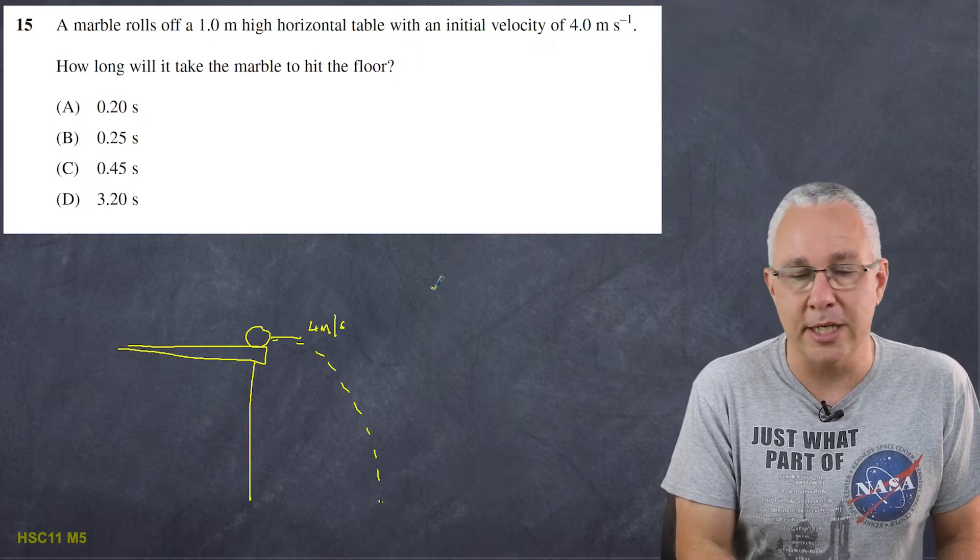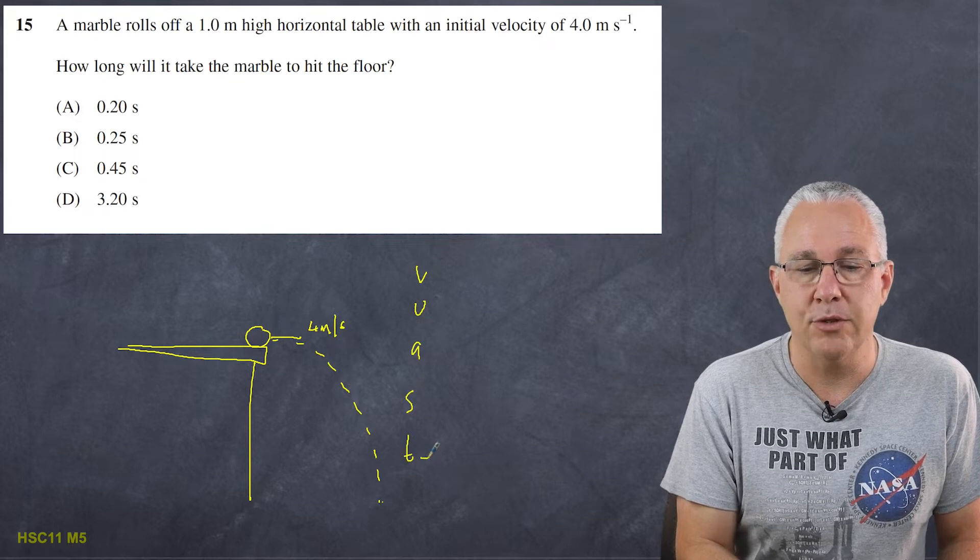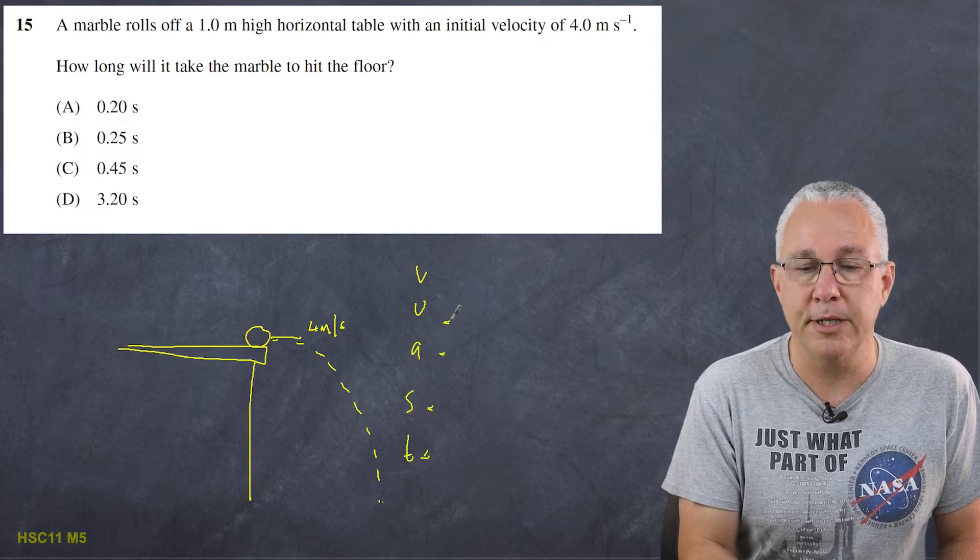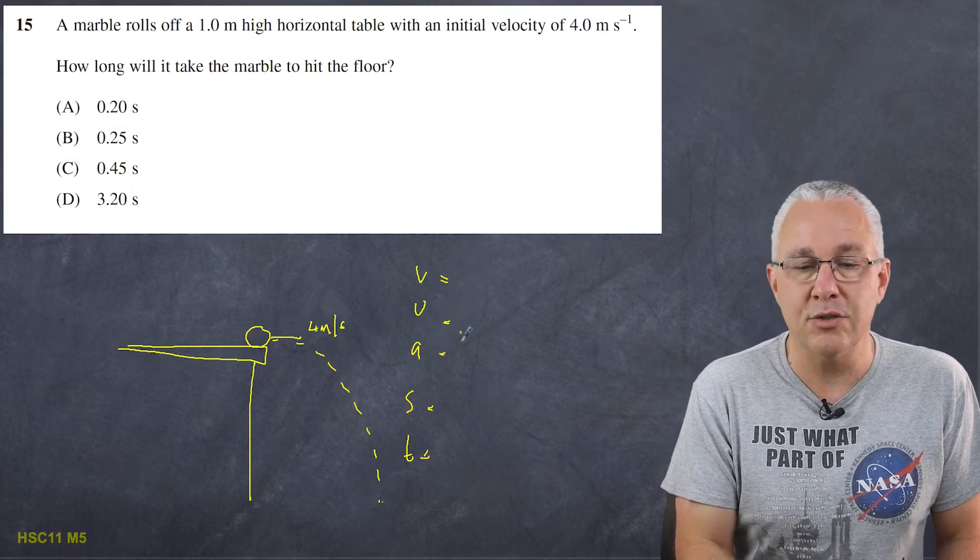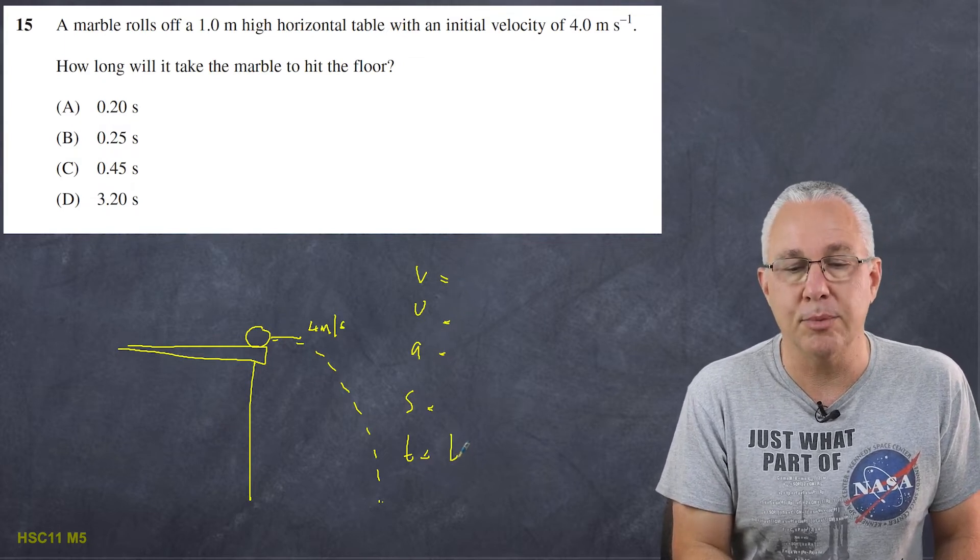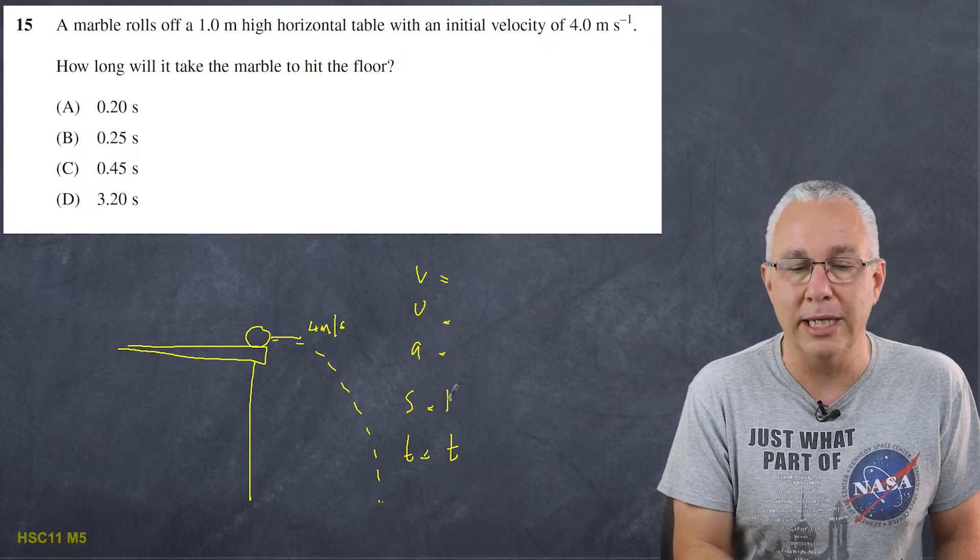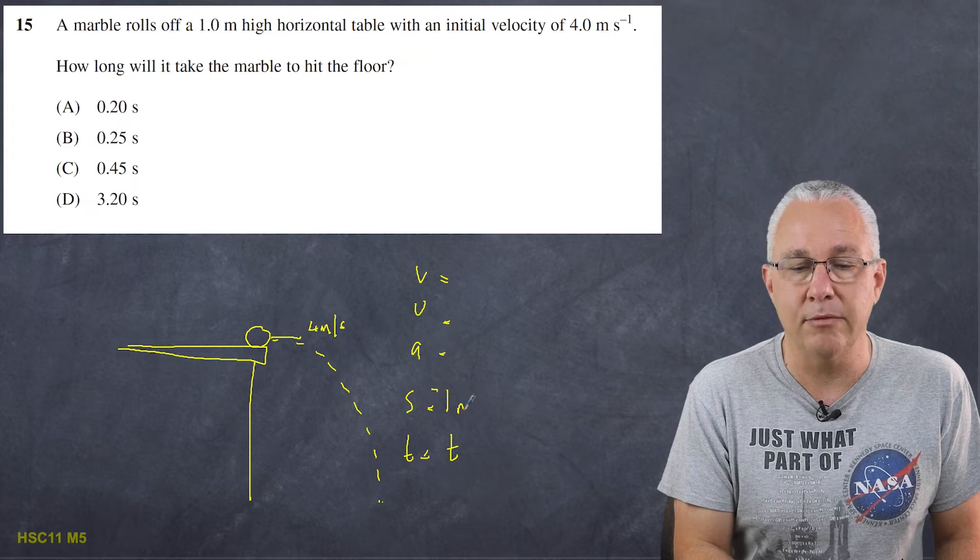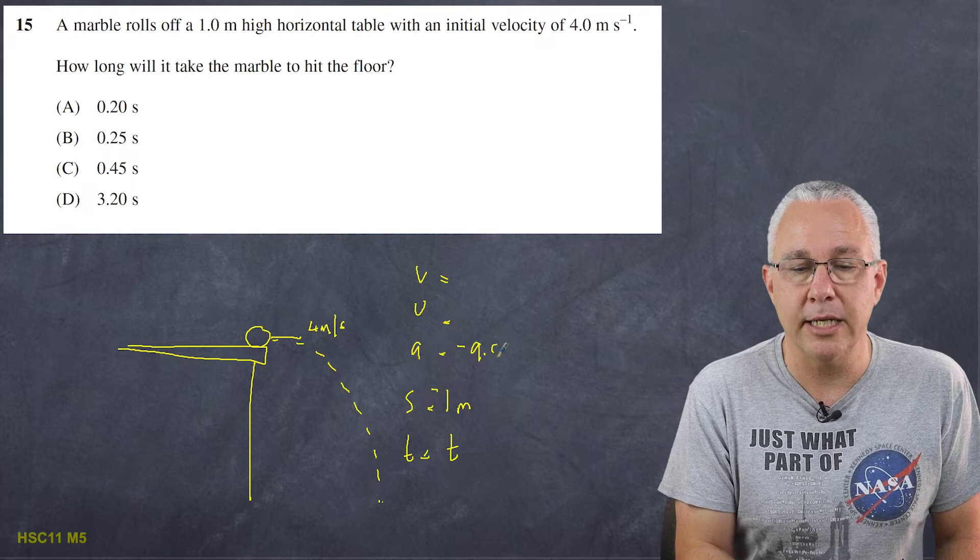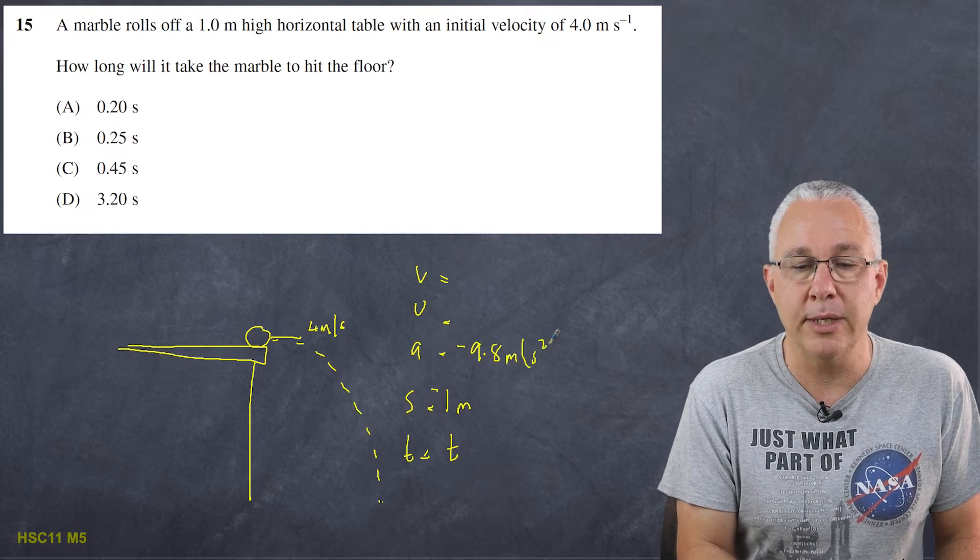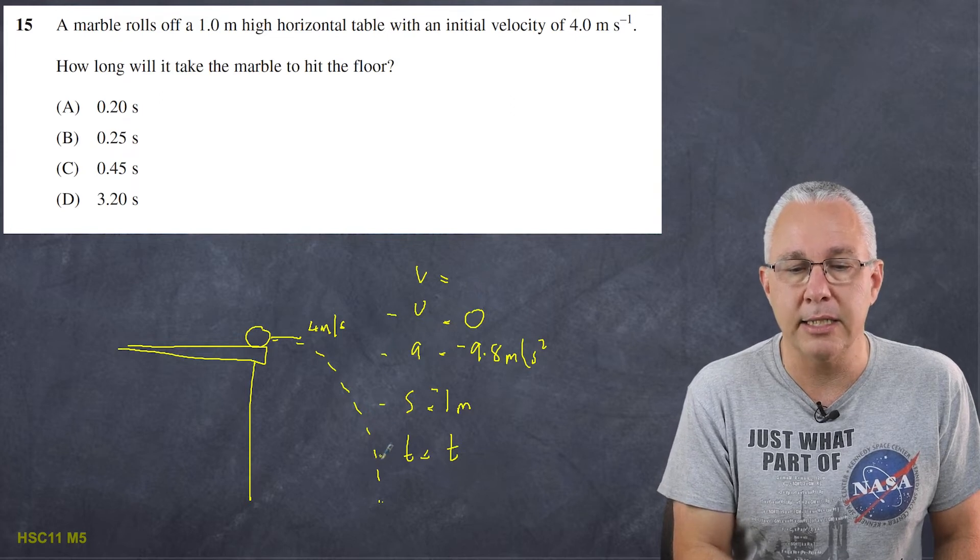And I always encourage my students to set out v, u, a, s and t which of course are your five possible variables that you'll have in a projectile motion problem. We're interested in the time so automatically I'm going to put t in there. Our displacement is given by one meter but of course it's falling downward so I'm going to make that negative one meter because it's a downward displacement. Acceleration is negative 9.8 meters per second squared. Our initial velocity vertically is zero. And now you can see I have u, a, s and t.